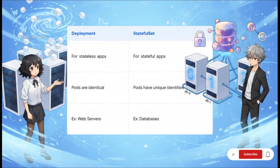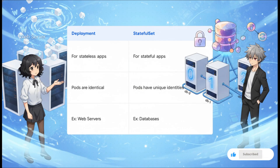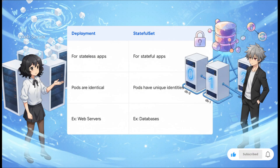Deployments are perfect for stateless apps like web servers, where every copy is identical and you don't care which one answers your request. But what about something like a database? That has state — the data itself — so you can't treat database replicas as interchangeable. For that, we use something different called a StatefulSet. It makes sure each pod gets a unique, sticky name and identity — like db-0, db-1, db-2 — and that stable identity is absolutely crucial for apps that need to keep track of their data.